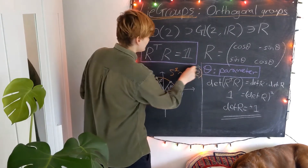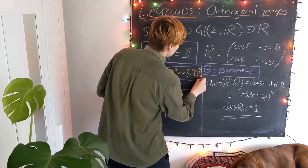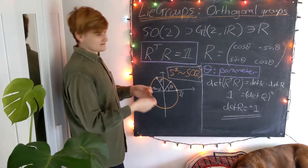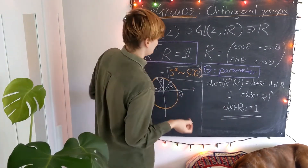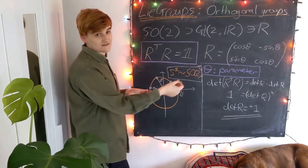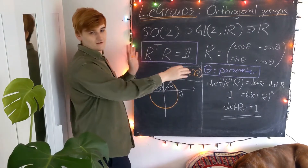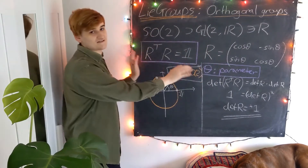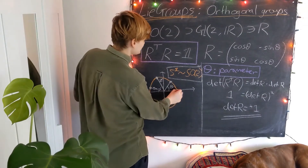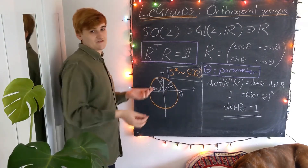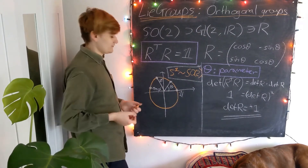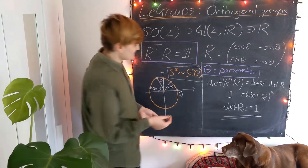SO(2) is topologically equivalent to the topological space S¹, which is the circle. This is an extremely important realization, cutting to the heart of the intersection between geometry and group theory: we can realize these abstract groups — sets of matrices — as manifolds. This is probably the simplest example of a group being a manifold.